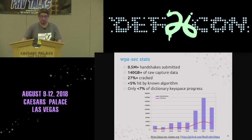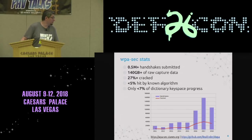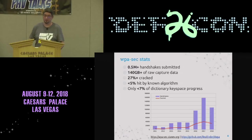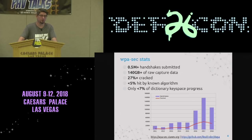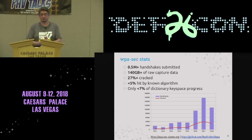Brief stats about the service: we now have more than half a million handshakes submitted, collected since 2011. Our overall success rate is around 27%. Algorithm generation is hitting around 5%, and from our dictionaries it's around 10% of the key space already cracked.